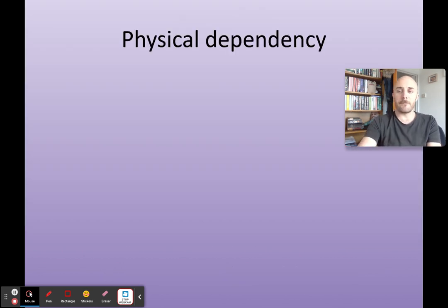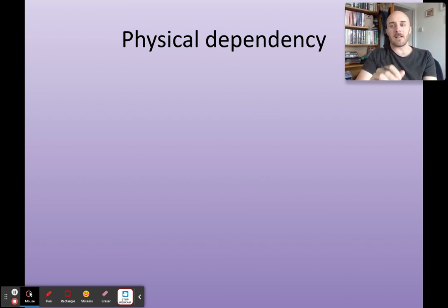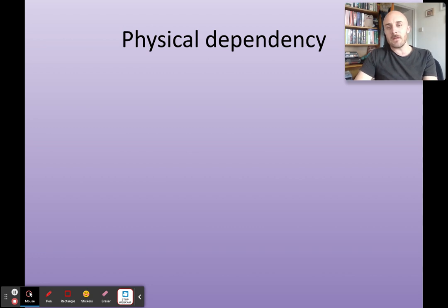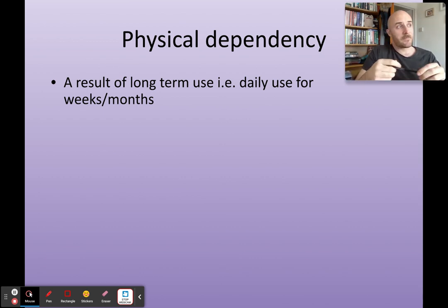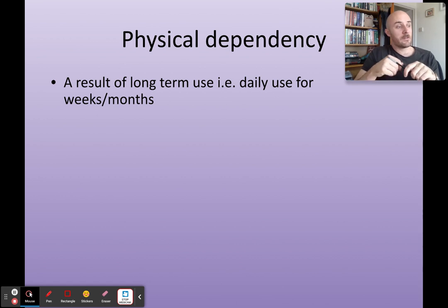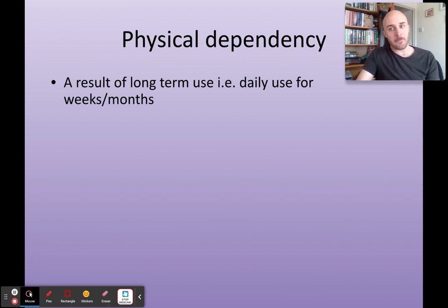The first term is physical dependency — you need to know all the key aspects and prepare for a little bit more detail. First, let's define addiction: it is a compulsive behaviour where you are compelled to act in a certain way, either through the ingestion of substances or through a behavioural compulsion such as gambling. You need to know the two types of dependency: physical and psychological.